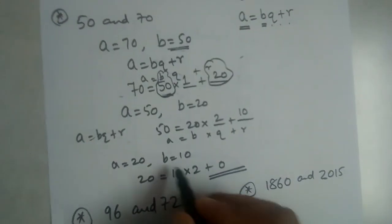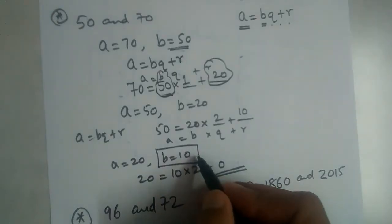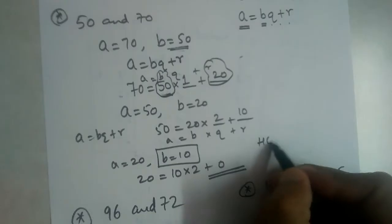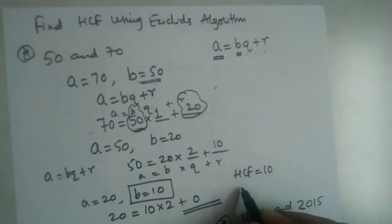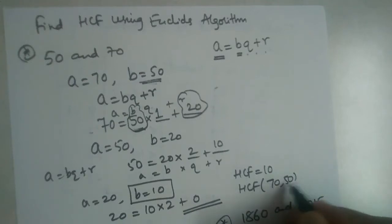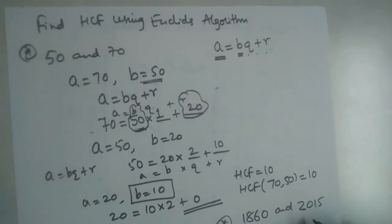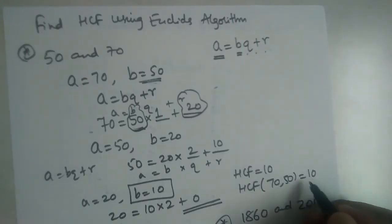The value of b when the remainder is 0 is our HCF. So in this case, HCF is equal to 10. We write it as: HCF of 70 and 50 is equal to 10.